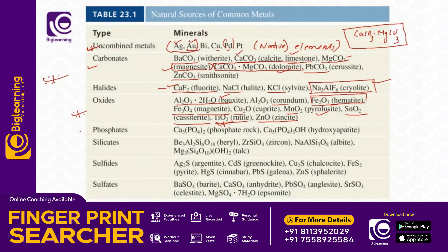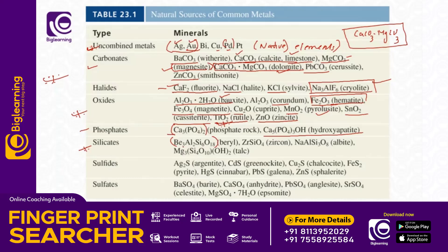Phosphate ores are very important. Calcium phosphate is a key phosphate mineral — it is called hydroxyapatite. Hydroxyapatite is calcium phosphate and is very important. We will get exam questions about organic and inorganic compounds in this area. Silicate minerals can also be used.